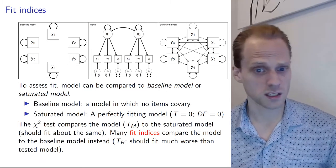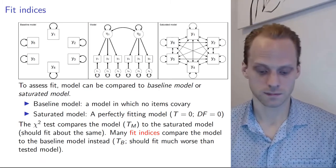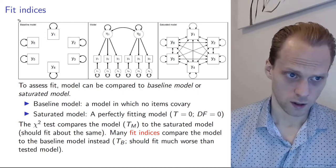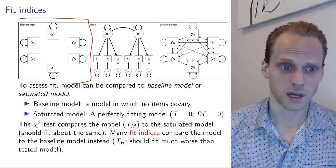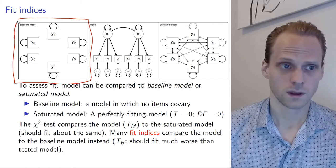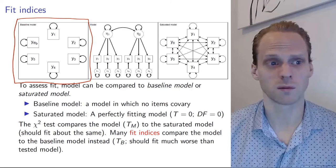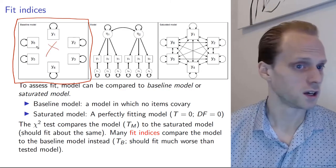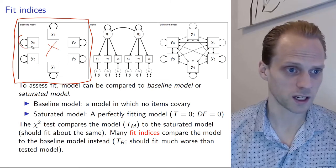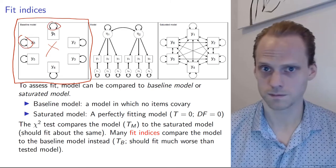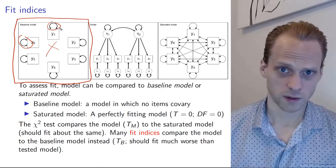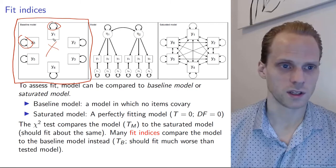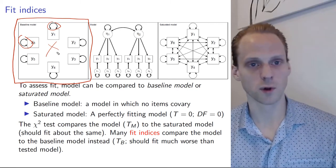All these fit indices are based on the same idea: we have a potentially really bad model, the baseline model. This is just the most simple model we can come up with — there's no correlation whatsoever between the items. Simply every item is assumed to have a variance and that's it, so we are explaining the variance of each variable but not any of the covariance between the items.